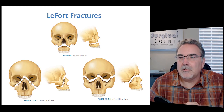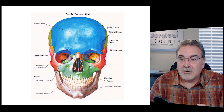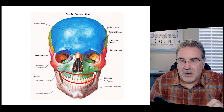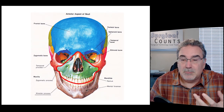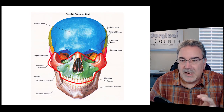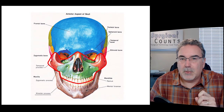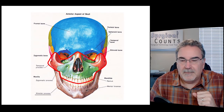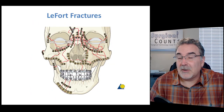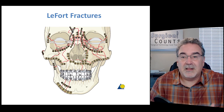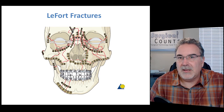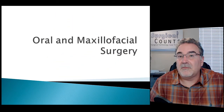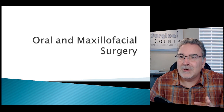Knowing the difference between those three types of LeFort fractures is important. Looking back at the skull anatomy: the alveolar process broken off is LeFort 1; the entire maxilla breaking away is LeFort 2; and when the maxilla and zygomatic bones both break away, that's LeFort 3. Every fracture is a little different and sometimes can be quite extreme, requiring many different plates, extensive surgery, and arch bars holding the jaw in place. That's it for oral and maxillofacial surgery — a short chapter, so really know your anatomy.